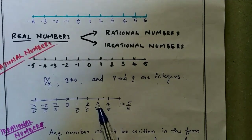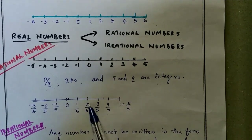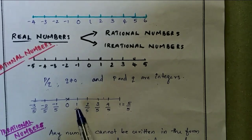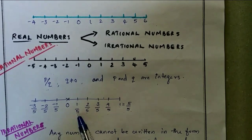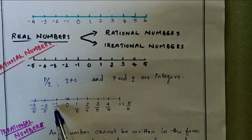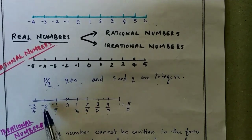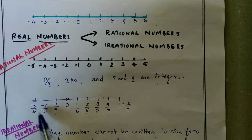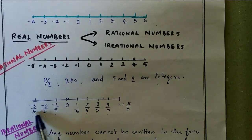On the number line, between zero and one, we can mark rational fractions: four by five, three by five, two by five, one by five, zero by five. And extending to negatives: minus one by five, minus two by five, minus three by five.